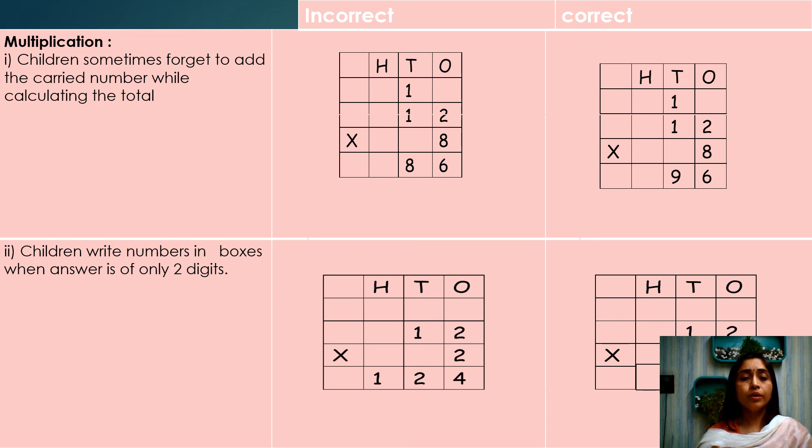Children write numbers in boxes when answer is of only two digits. 12 multiplied by 2 is equal to 24. But instead of 24, they write down 124, which is wrong.